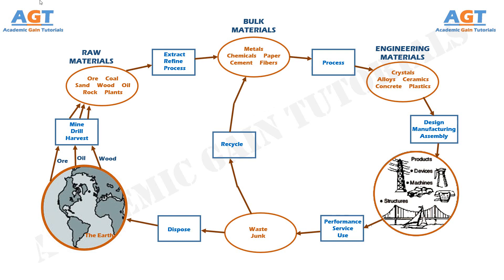So the materials cycle is a global system whose operation includes a strong three-way interaction among the materials, the environment, and the energy supply and demand. The condition of the environment depends in large degree on how carefully man moves materials through each of the stages of this cycle, because at each of these stages, environmental impacts occur.